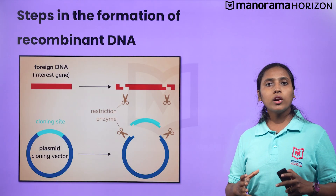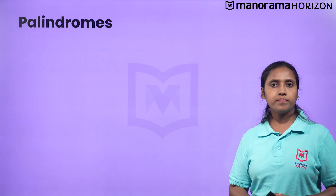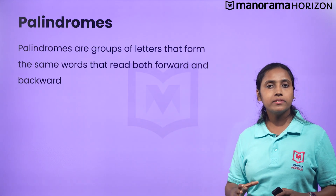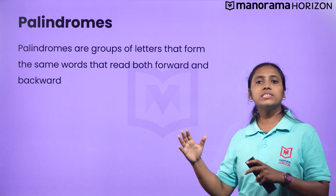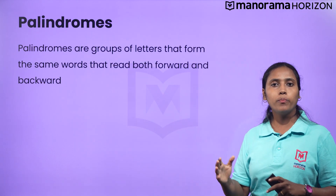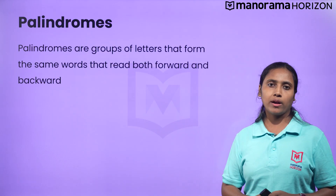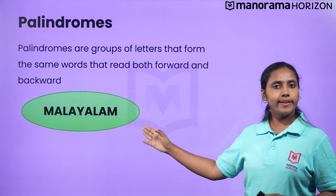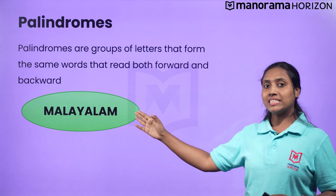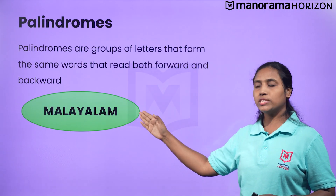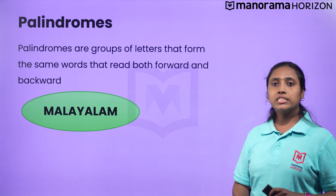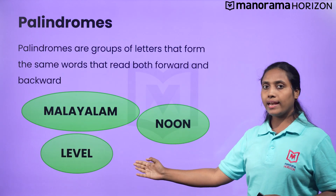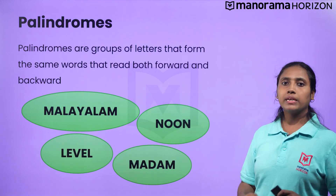Do you know what palindromes are? Palindromes are groups of letters that form the same word read both forward and backward. For example, the word 'Malayalam' is read the same from forward as well as backward. Similarly with the words noon, level, madam, etc.